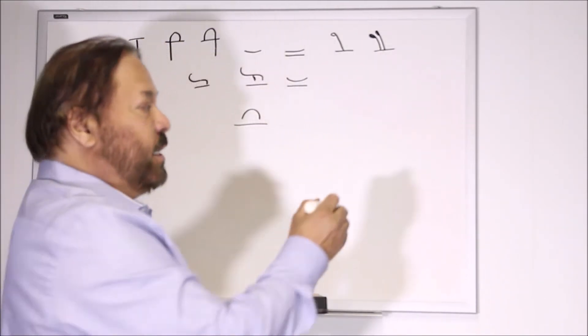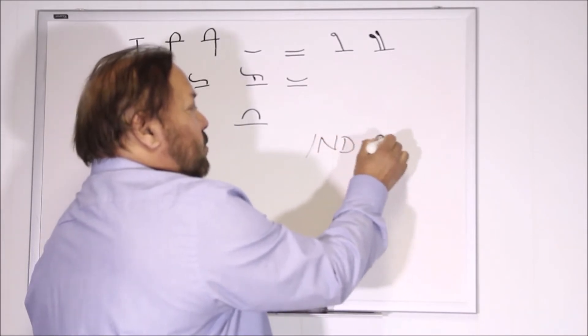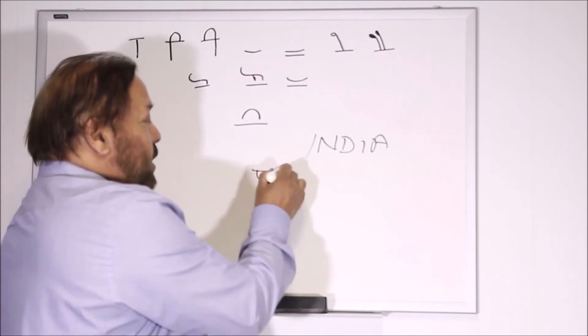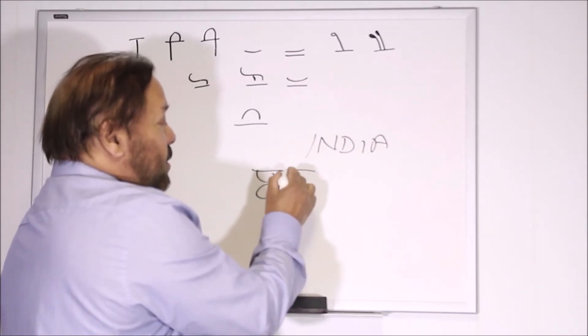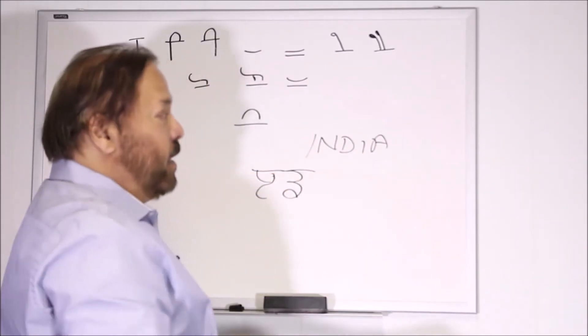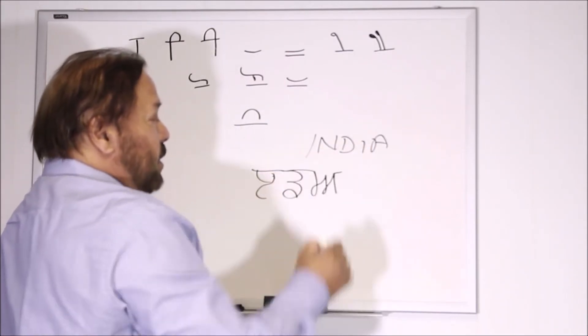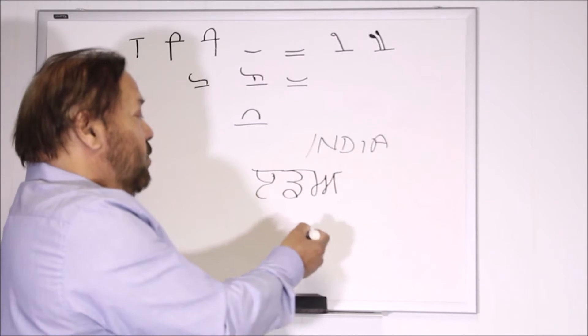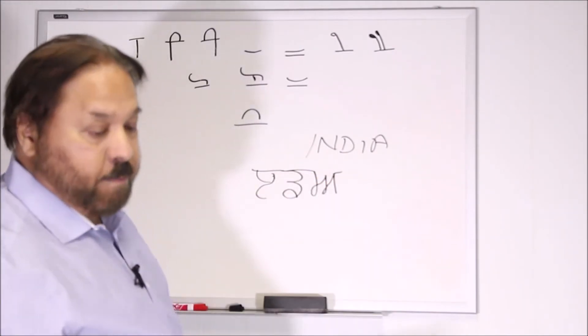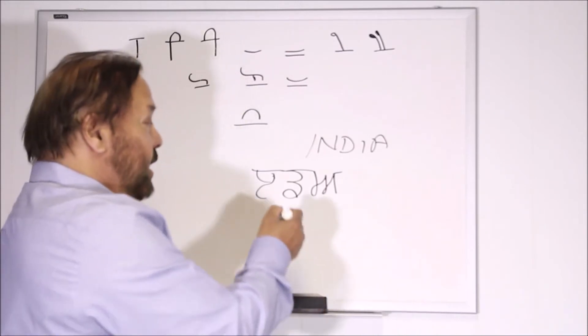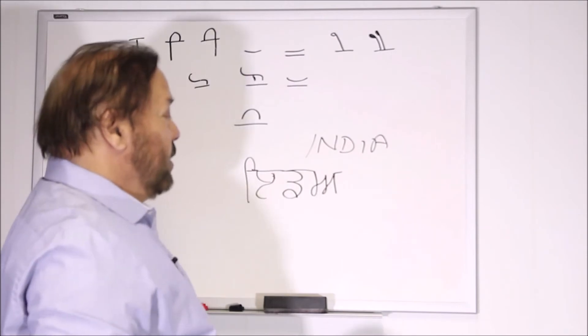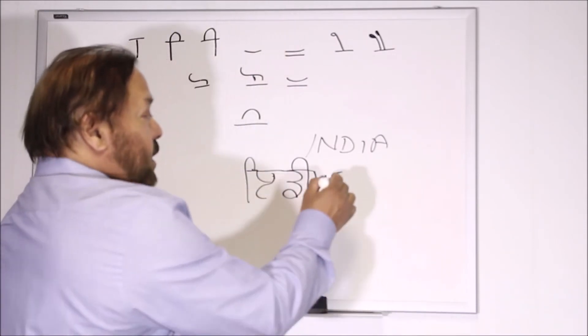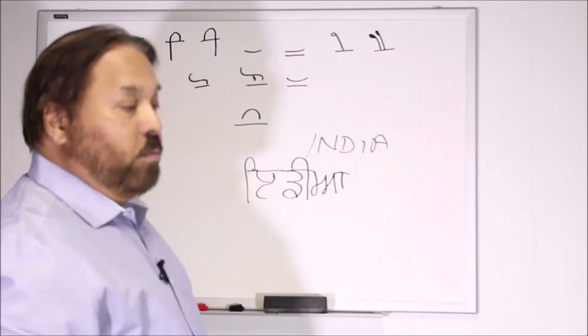First letter we can use India. In Punjabi, we will write down Edi, then Da. Now to make the sound, E gives you the sound Da, it doesn't make nothing. You remember we use Sihari to make E.